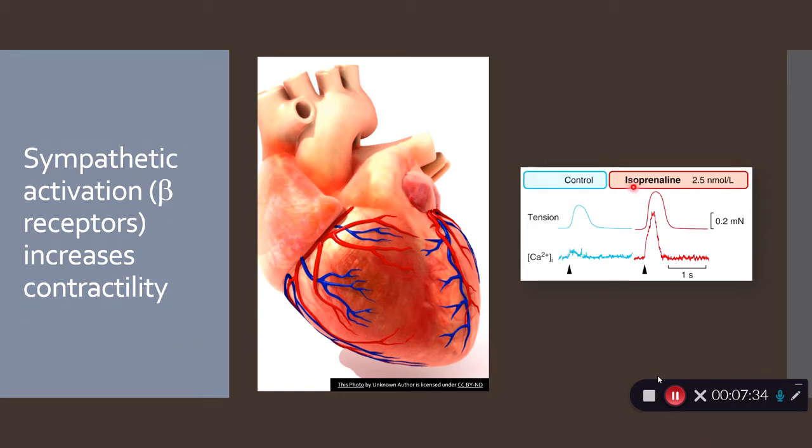In the presence of isoprenaline, which is a beta agonist, so it's mimicking adrenaline, when we add isoprenaline we get a much stronger contraction and a considerably bigger rise in intracellular calcium.